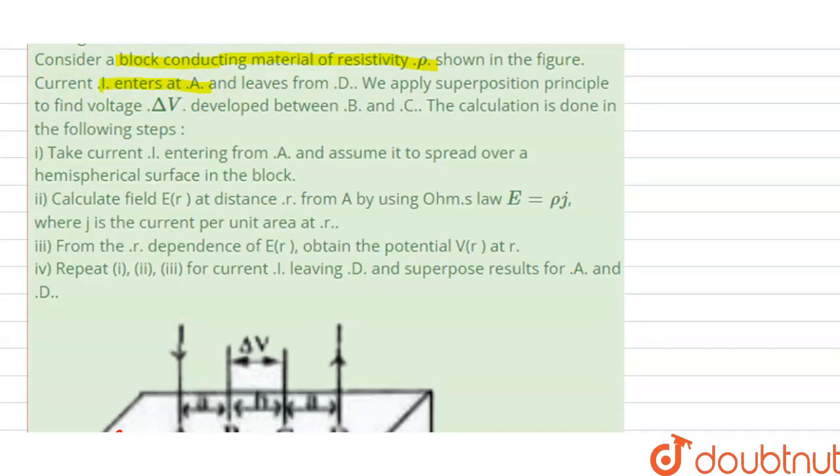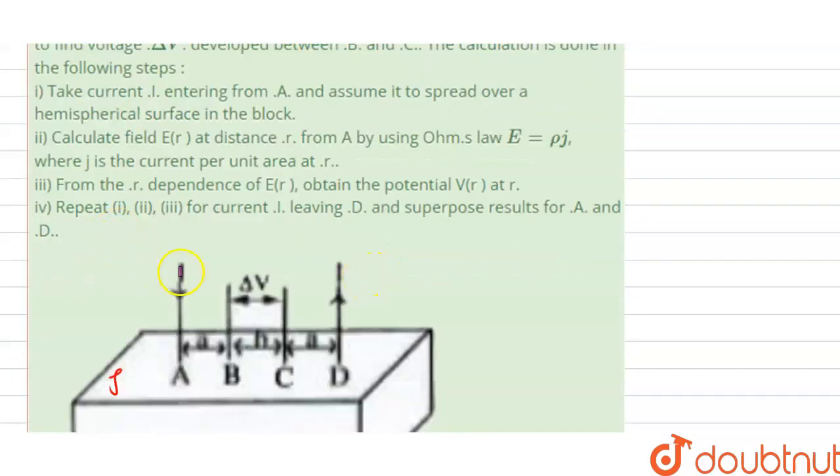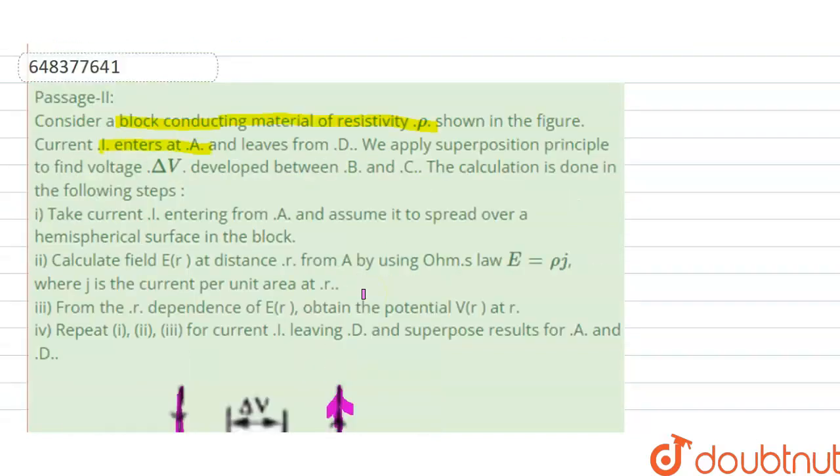Next, it is saying current I enters at A. In the diagram we can see that current I is entering through A here and leaving through D from here.